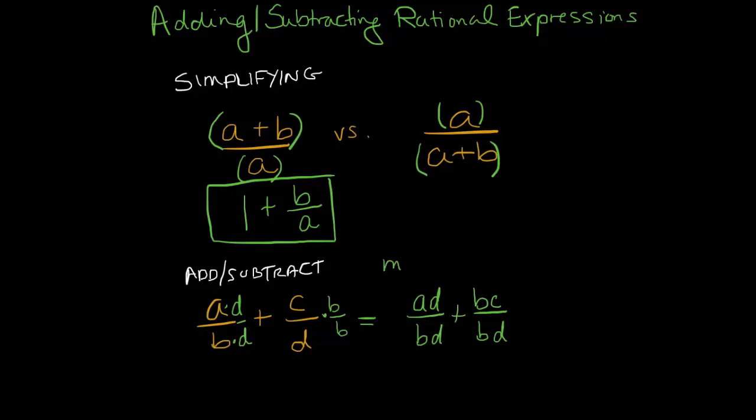So then that would become ad over bd plus bc over bd. So we made common denominators. Once you have the common denominator, you can simply add your numerators. So we have ad plus bc over bd, and now it is simplified.